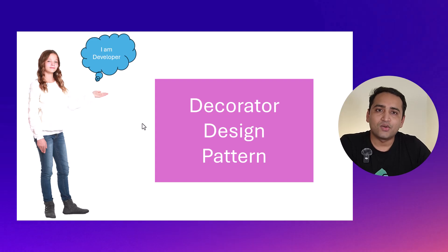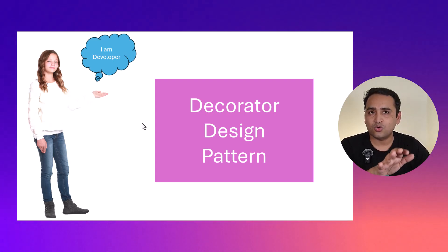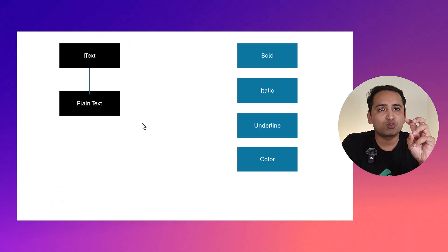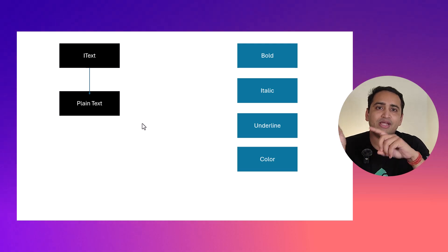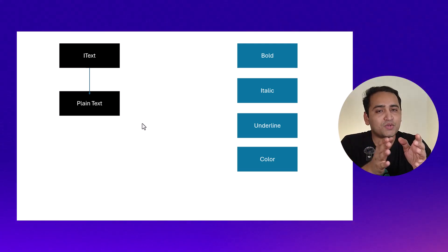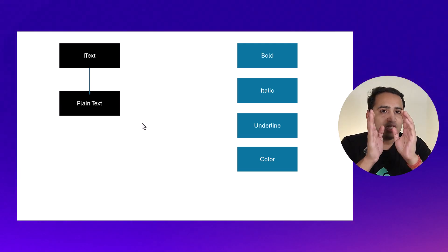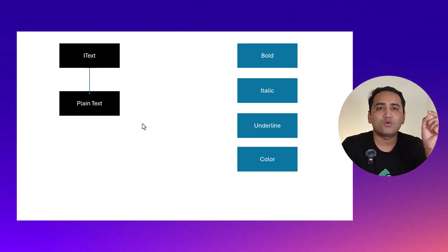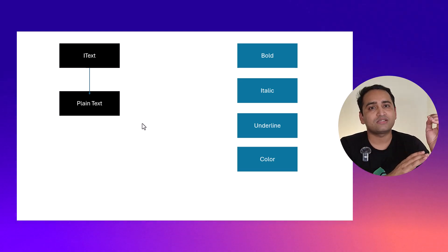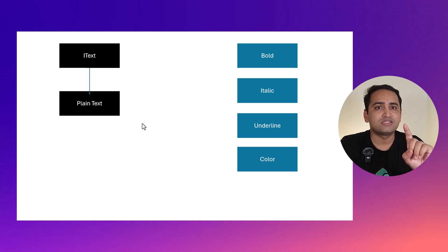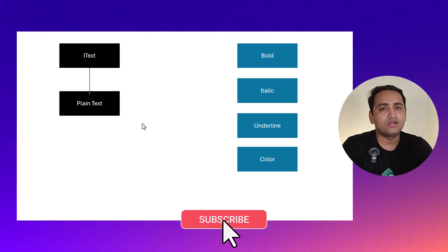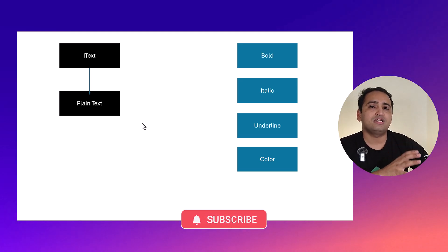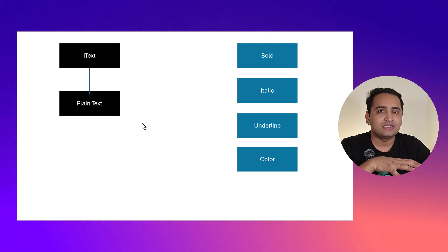The solution to this problem is the Decorator design pattern. We will divide the entire situation into two parts: one is the Component and the second is the Decorator. The Component is the plain text — that's the main object. The Decorator is bold, italic, underscore, color — all the features we want to have in the application. Each feature individually is one single decorator. If we define each decorator in a separate class, in our client application we can call them in any order.